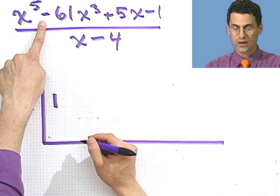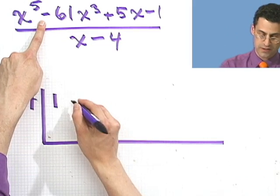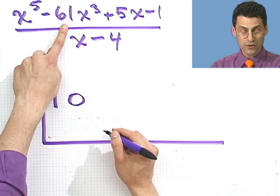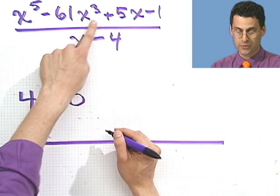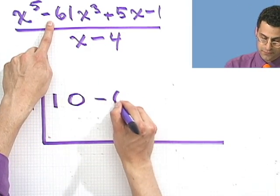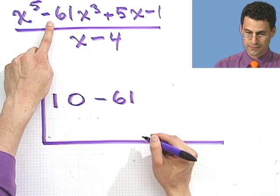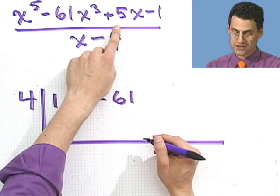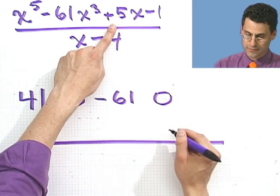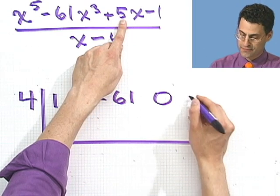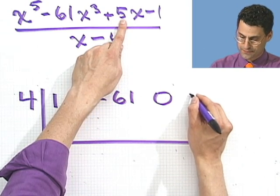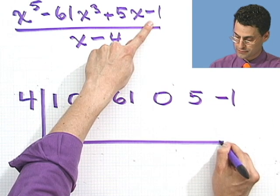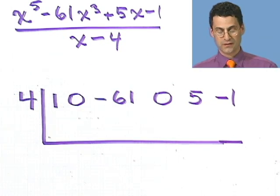I see no x to the fourth, so I put a 0. I see x cubed with coefficient minus 61, so I put in minus 61. I see no x squared, so I put a 0 there. Then I see a 5 for the x term, and then minus 1 for the constant.